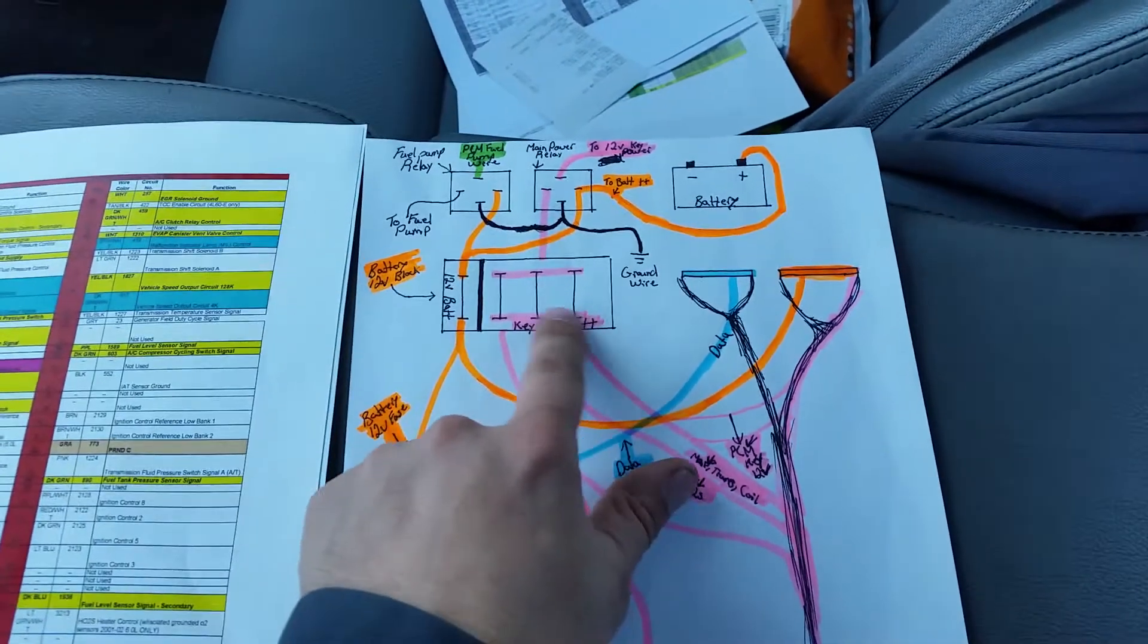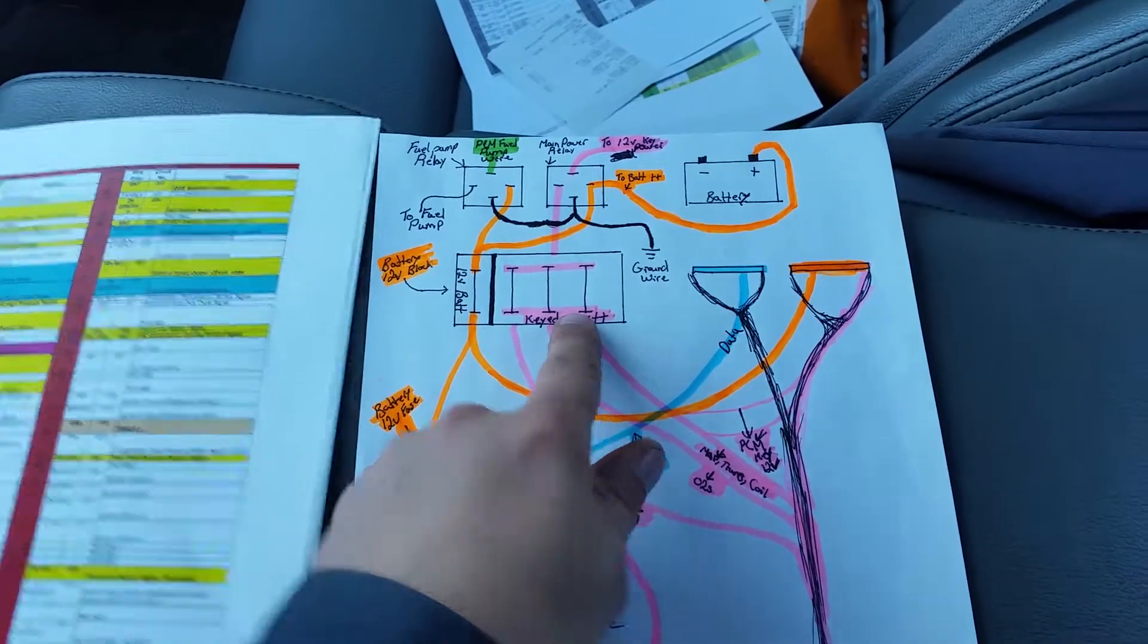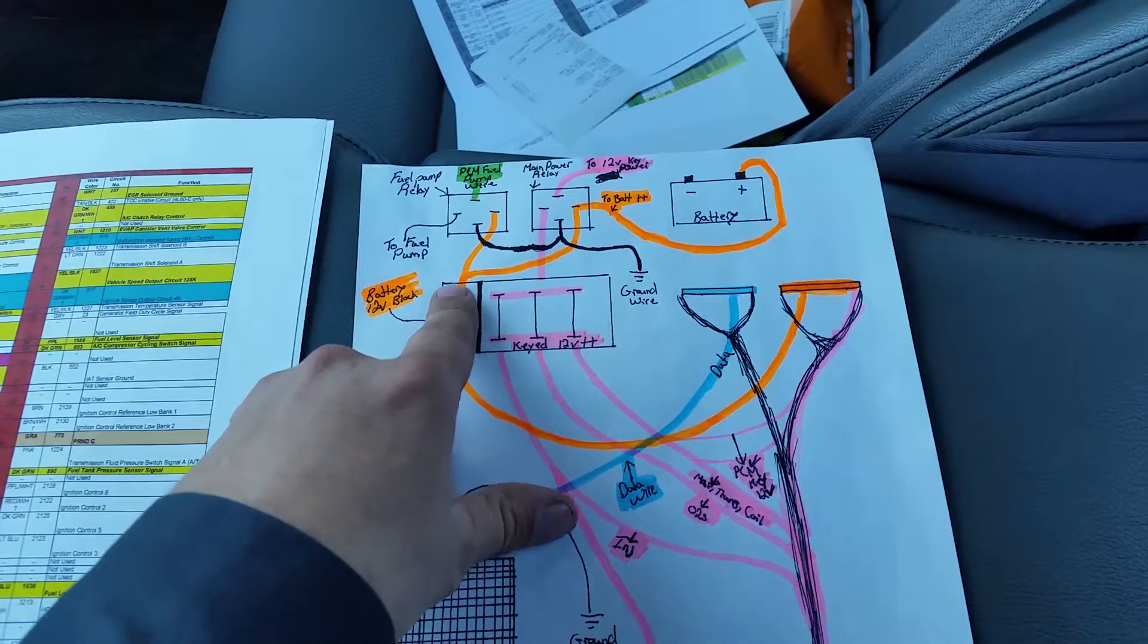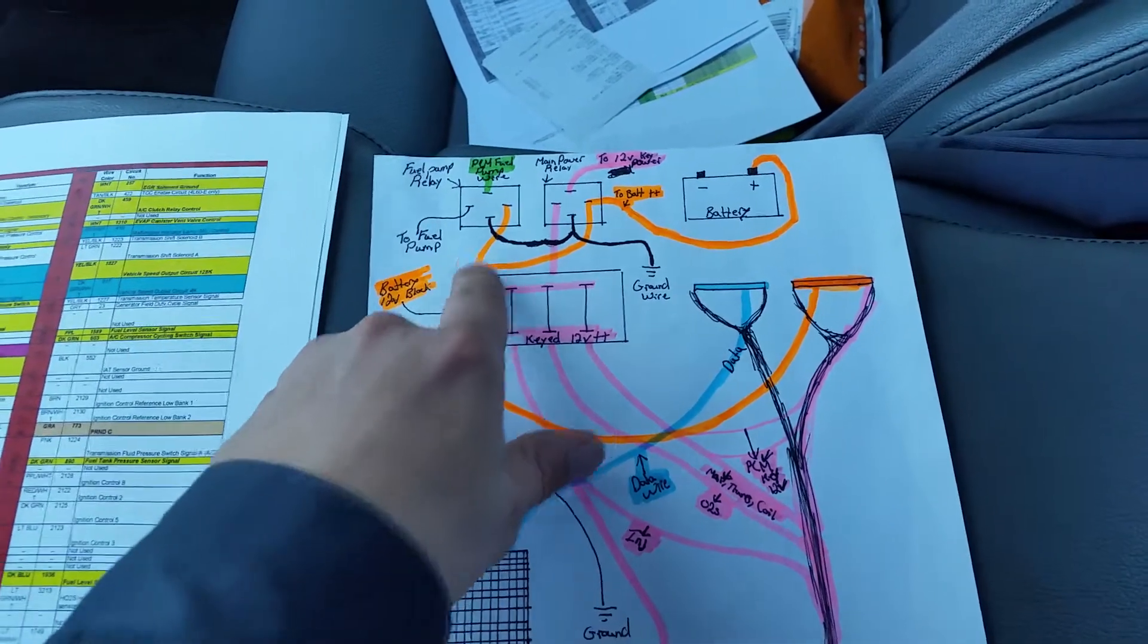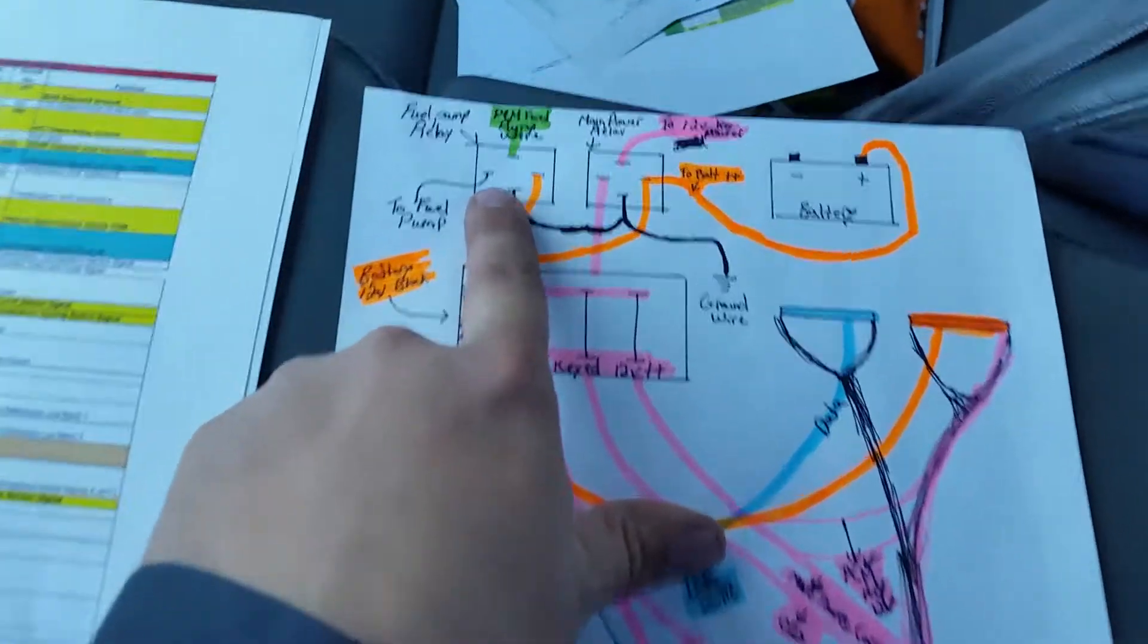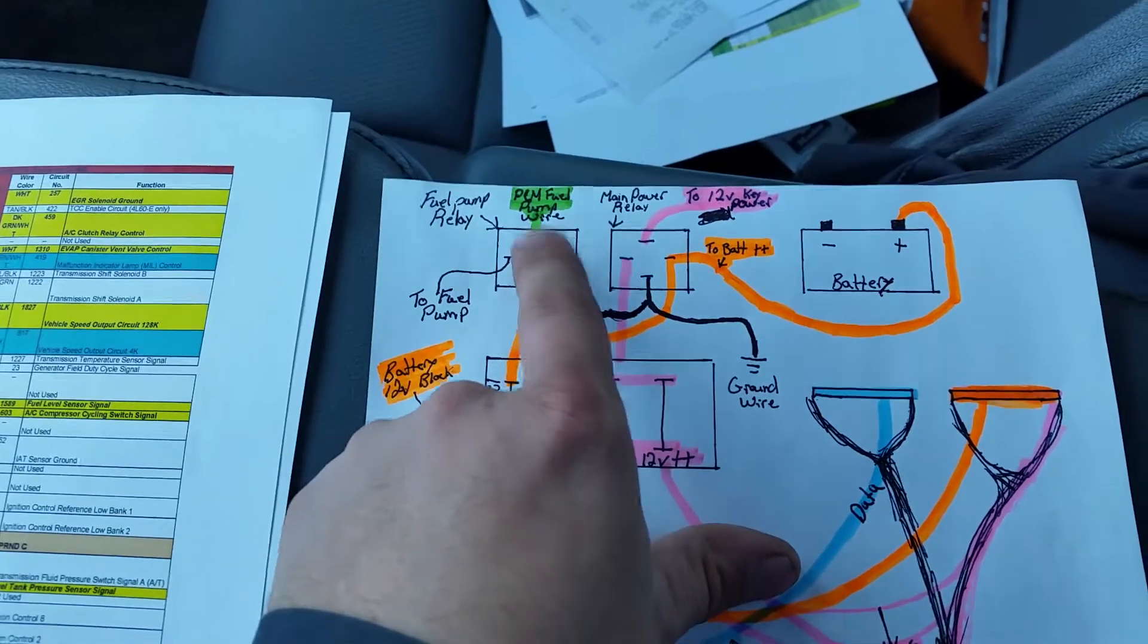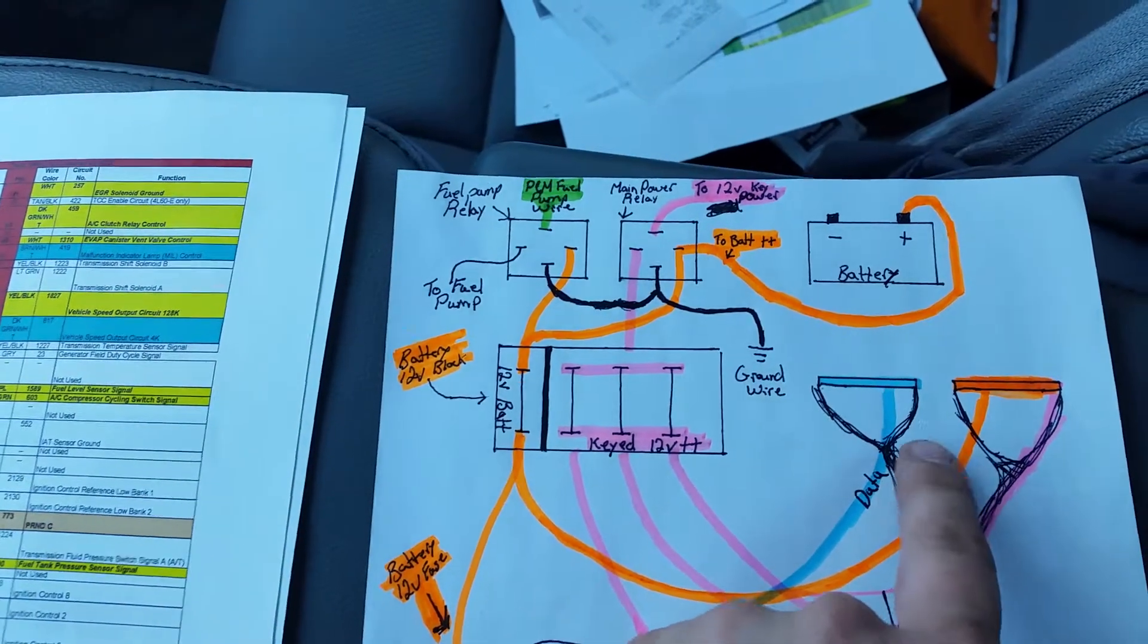Jumping over to the fuel pump relay again, we have the main wire coming down to the constant 12-volt fuse block, the ground, and the left one will run to the fuel pump. The top one is gonna run from the green wire on your PCM plug to it.